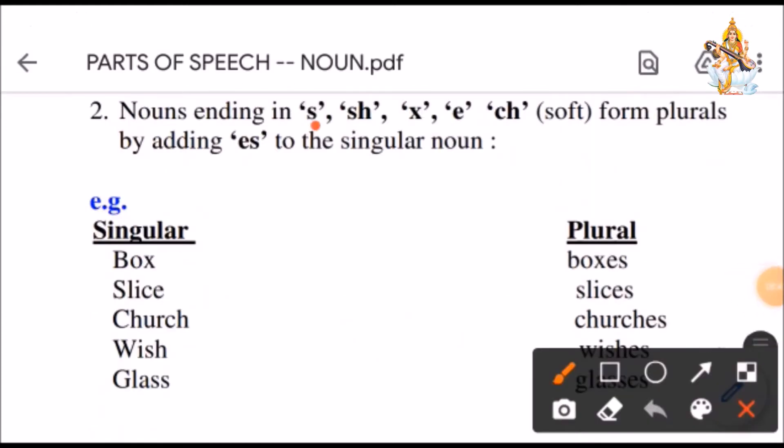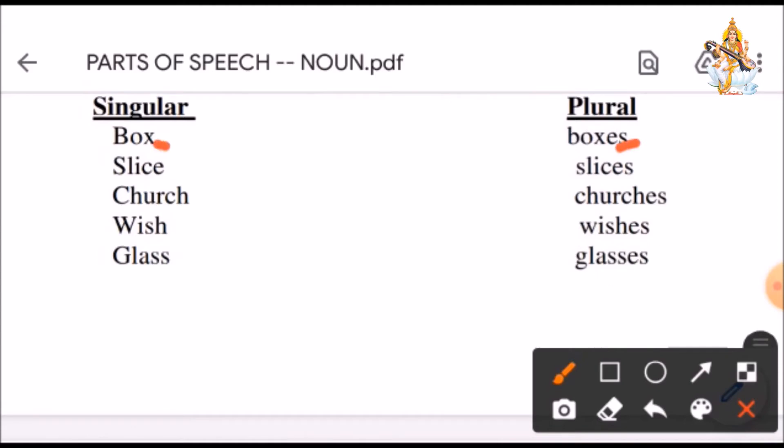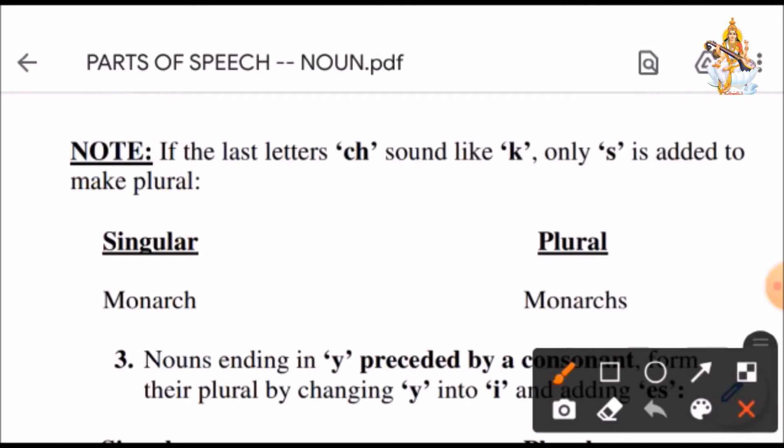Nouns ending with S, SH, X, E or CH form plurals by adding ES to the singular. See, box, boxes, the end word is X, we have added ES to it. Slice, slices, end word is E, we have added S, slices. Church, there is soft CH sound, churches. Wish, SH sound, wishes. Glass, glasses. One important thing you should remember that if the last letter CH sound like K, only S is added to make it plural. Like Monarch, here CH is pronounced as K. So, we just add S to make it plural.